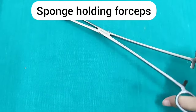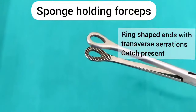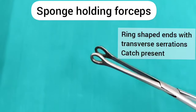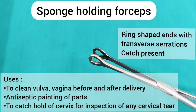The most common instrument — the sponge holding forceps. It has ring-shaped ends with transverse serrations. It has a catch. It is used to clean the vulva and vagina before and after delivery, for antiseptic painting of parts, and to catch hold of the cervix for inspection of any cervical tear.